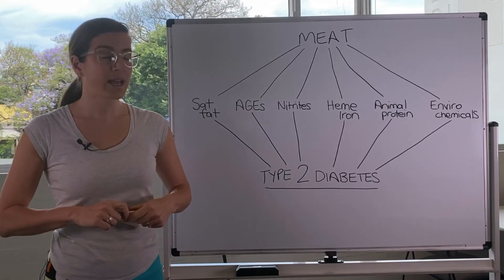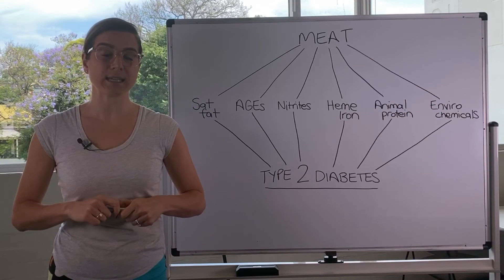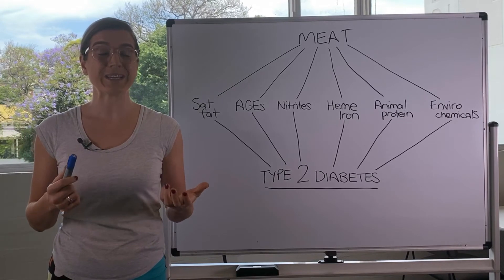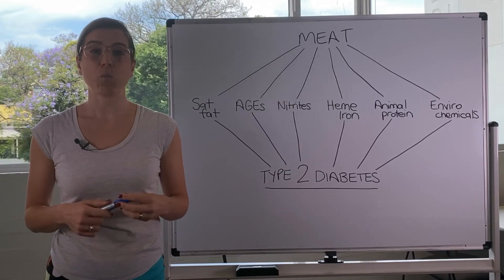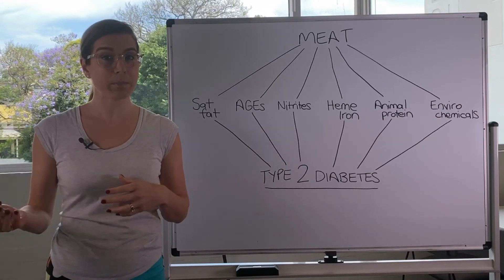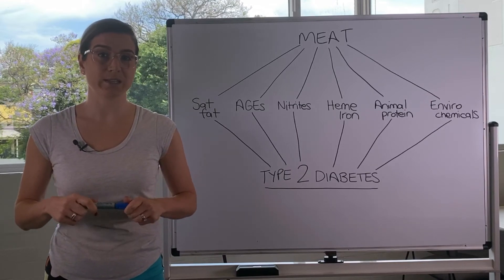The next one is animal protein. So people with the highest intake of animal protein or a high intake of animal protein can reduce your insulin sensitivity by as much as 25%. And when you replace these meat products with plant-based proteins like soy protein, you significantly improve insulin sensitivity.